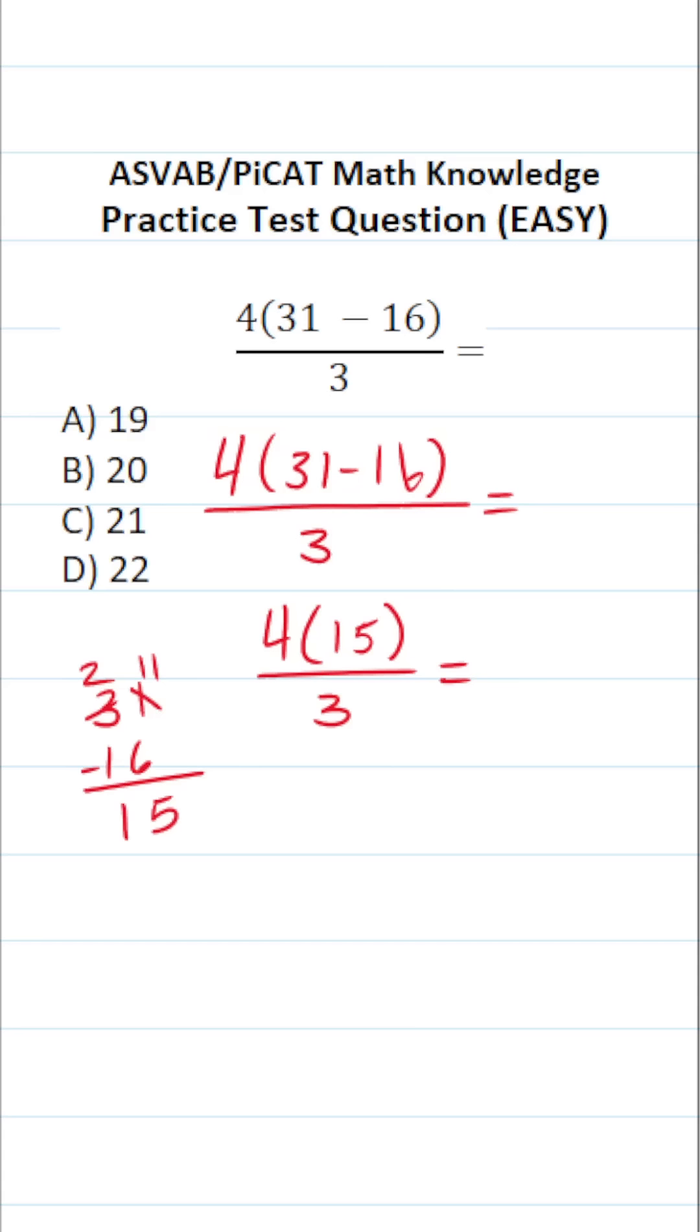Now, we can make this problem a lot easier by breaking this apart to be 4 over 1 times 15 over 3 equals. 4 divided by 1 is just 4. 15 divided by 3 is 5. 4 times 5 is 20. So the correct answer to this one is B, 20.